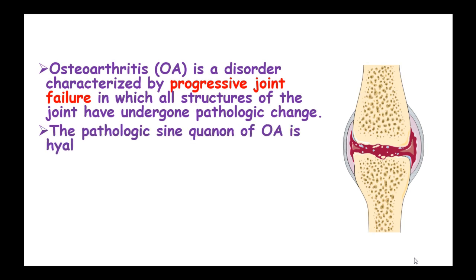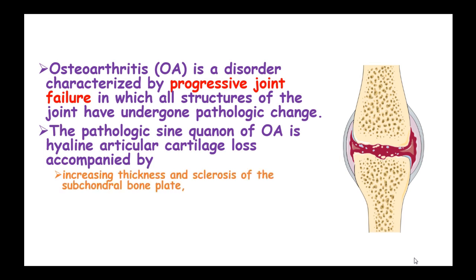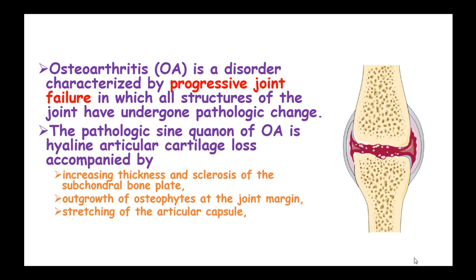The pathologic sine qua non of osteoarthritis is hyaline articular cartilage loss, which is accompanied by increasing thickness and sclerosis of the subchondral bone plate, outgrowth of osteophytes at the joint margin, stretching of the articular capsule, and weakening of the muscles bridging the joints.